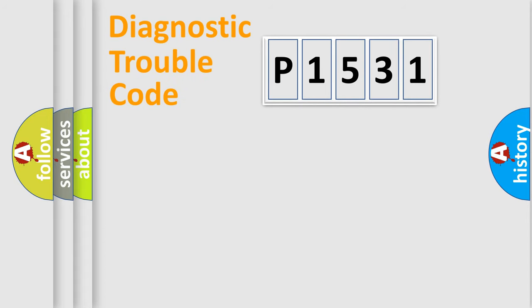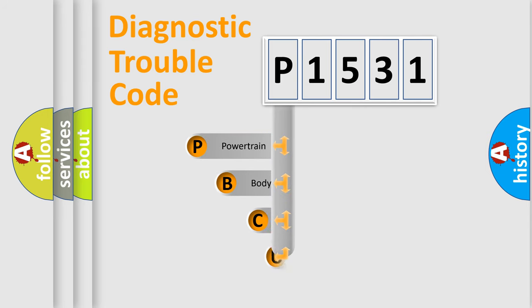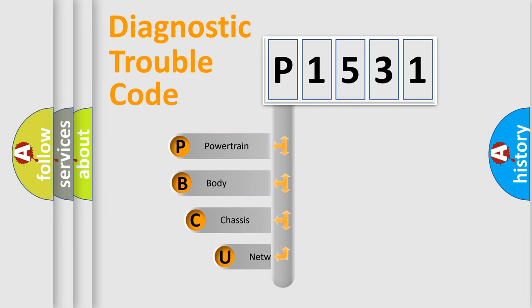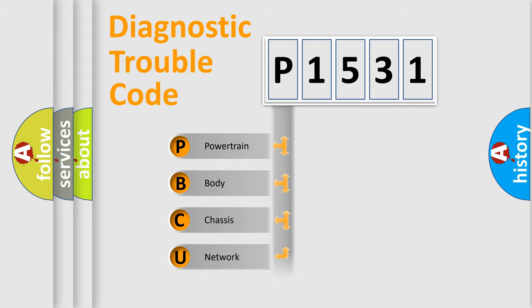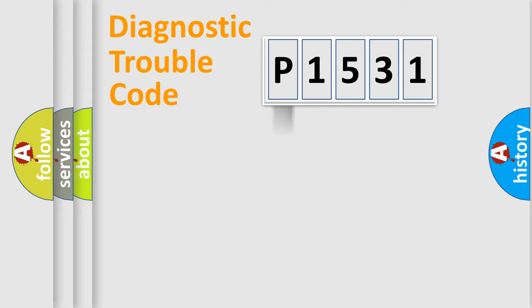First, let's look at the history of diagnostic fault code composition according to the OBD2 protocol, which is unified for all automakers since 2000. We divide the electric system of an automobile into four basic units: Powertrain, body, chassis, network.